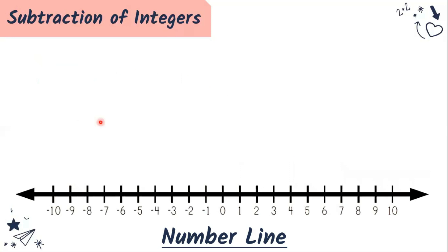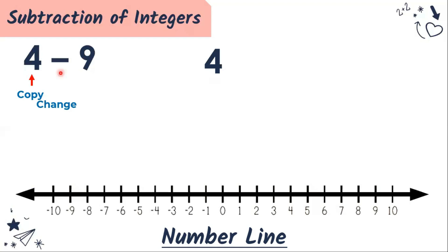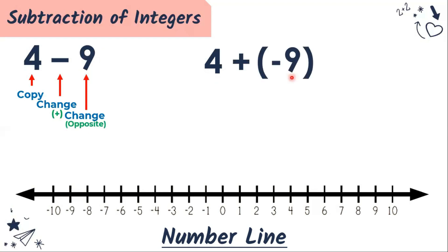How about the second one: 4 minus 9. First, copy the first number — we have four. Second, change our subtraction sign to addition sign — plus. Third, change our second number to its opposite sign. This is a positive number, therefore we're going to change it to negative nine. That means 4 minus 9 is equal to 4 plus negative nine.